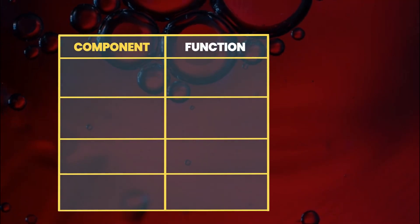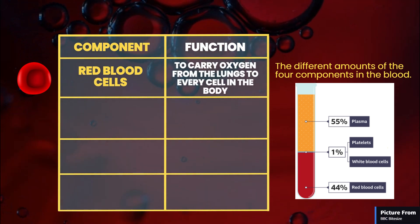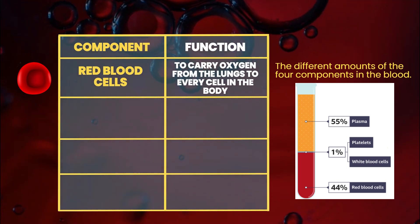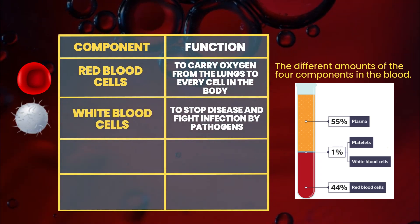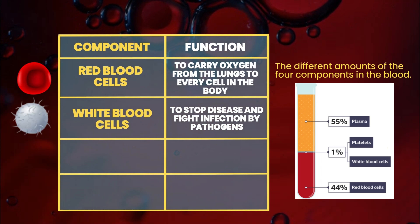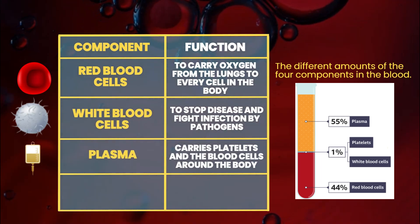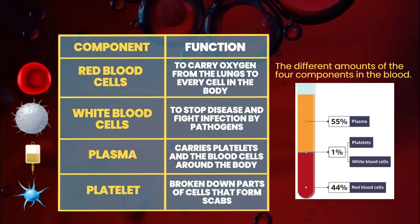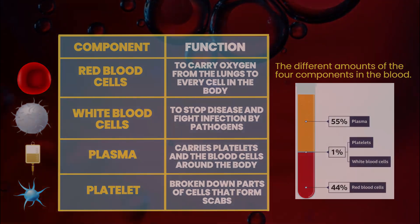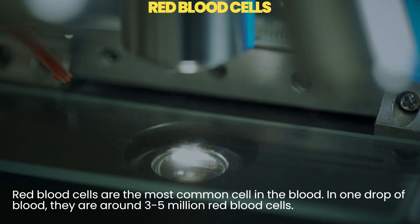Red blood cells carry oxygen from the lungs to every cell in the body. White blood cells stop disease and fight infection by pathogens. Plasma carries platelets and the blood cells around the body. Platelets are broken down parts of cells that form scabs.